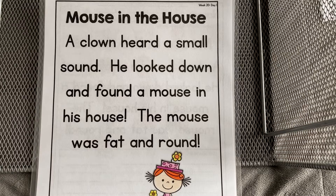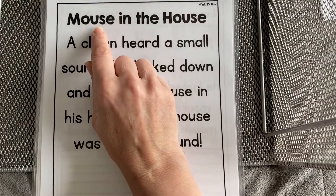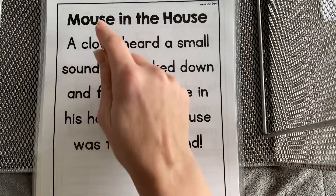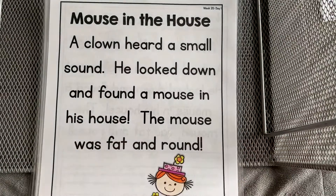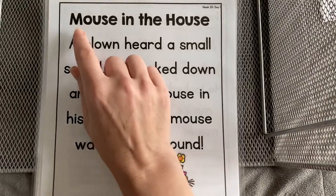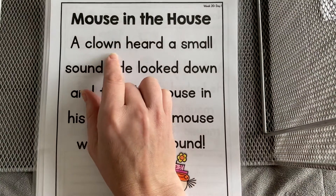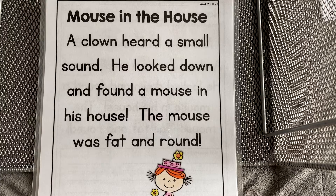Hi friends! Welcome back to our week 20 phonics lesson. This week is about OU and OW words, like in 'mouse' (OU) or 'clown' (OW), that make the OW sound. We'll get to hear it more as we go along.